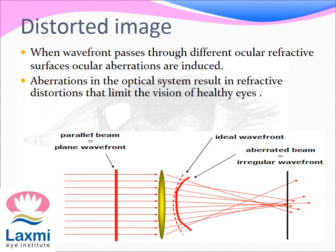When this wavefront passes through different ocular refractive surfaces, aberrations are induced giving a distorted image. Aberrations in the optical system result in refractive distortions that limit the vision of healthy eyes. These are caused by the tear film, cornea, aqueous, lens and vitreous.